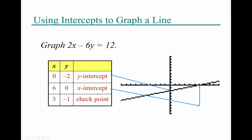Using the intercept method for 2x − 6y = 12: since 12 is a multiple of both 2 and 6, this method avoids fractions. For the y-intercept, set x = 0, leaving −6y = 12, so y = −2, giving (0, −2). For the x-intercept, set y = 0, leaving 2x = 12, so x = 6, giving (6, 0). The point (3, −1) also lies on the line and serves as the checking point.